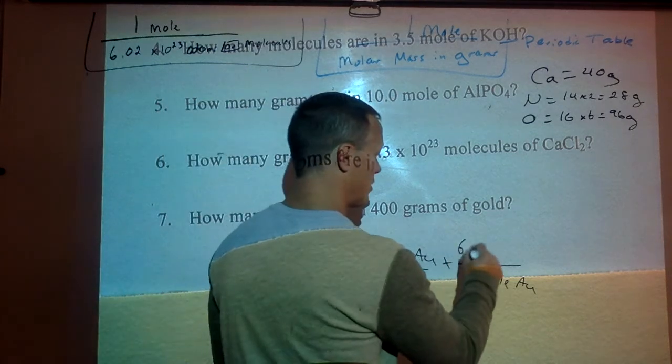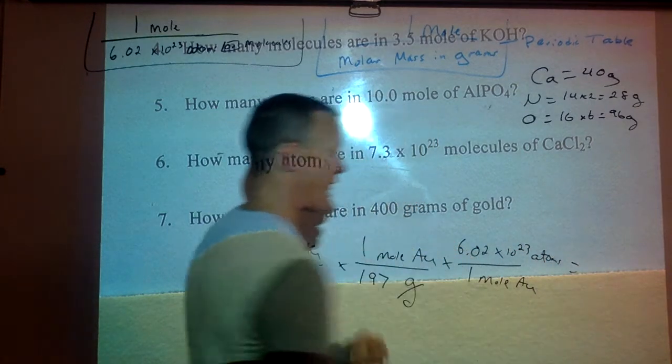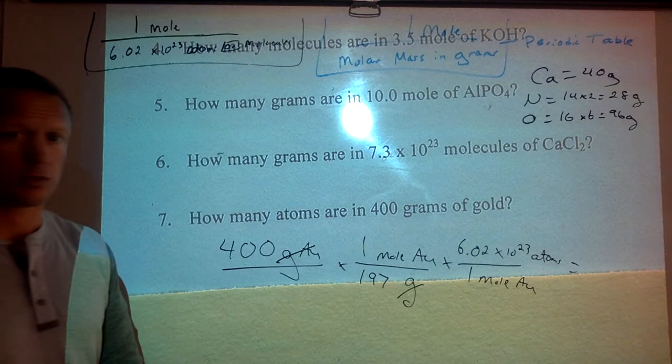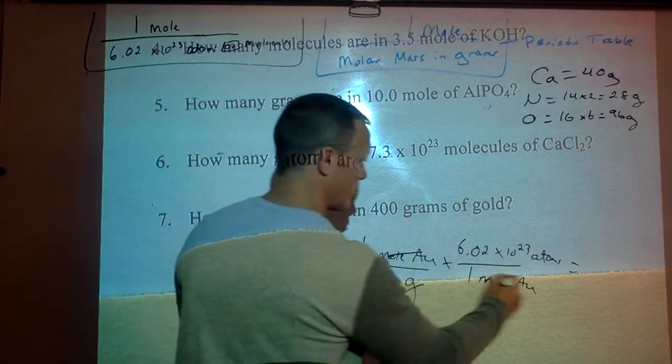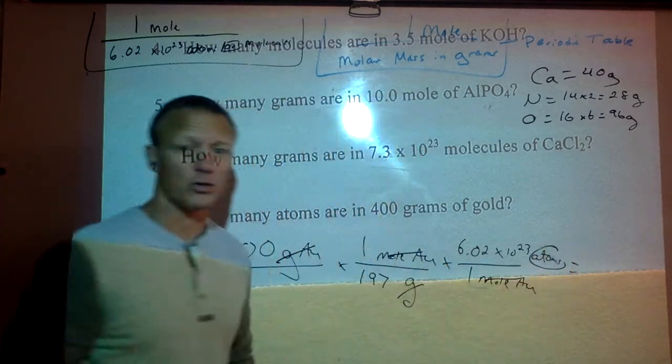so our next one would be 6.02 times 10^23 atoms. The mole cancels. We're left with atoms on top. That's the label we want, so we know we're done.